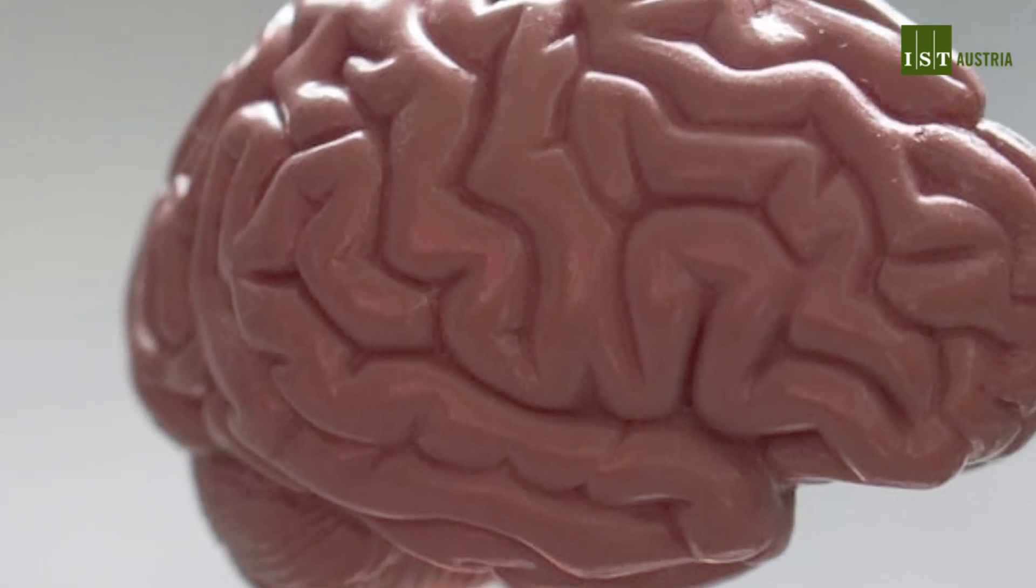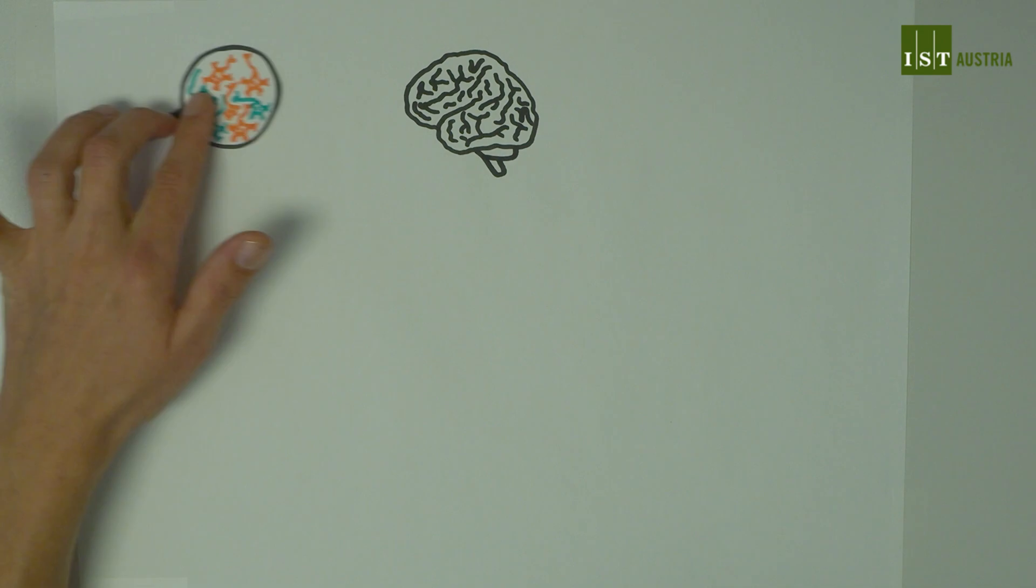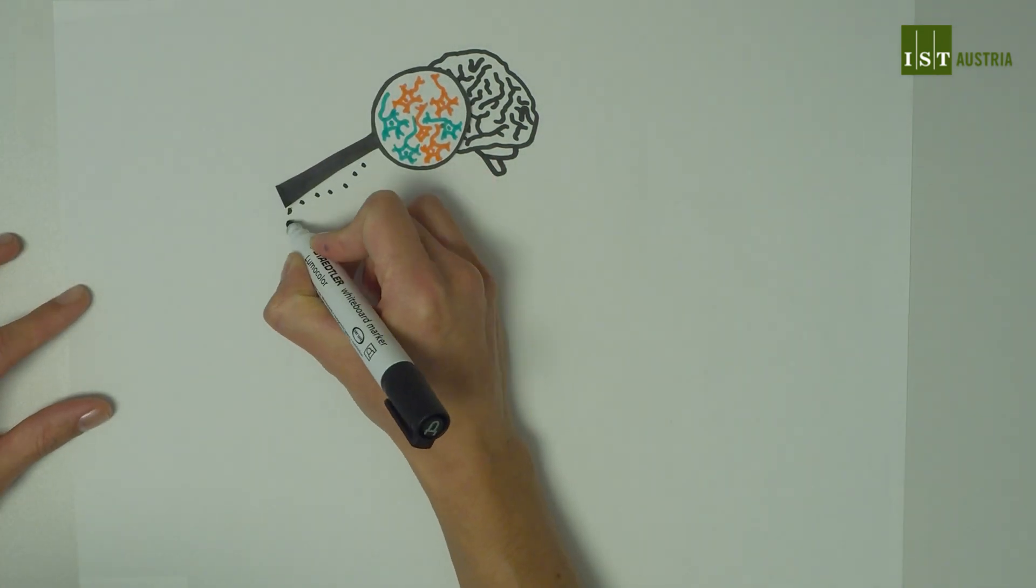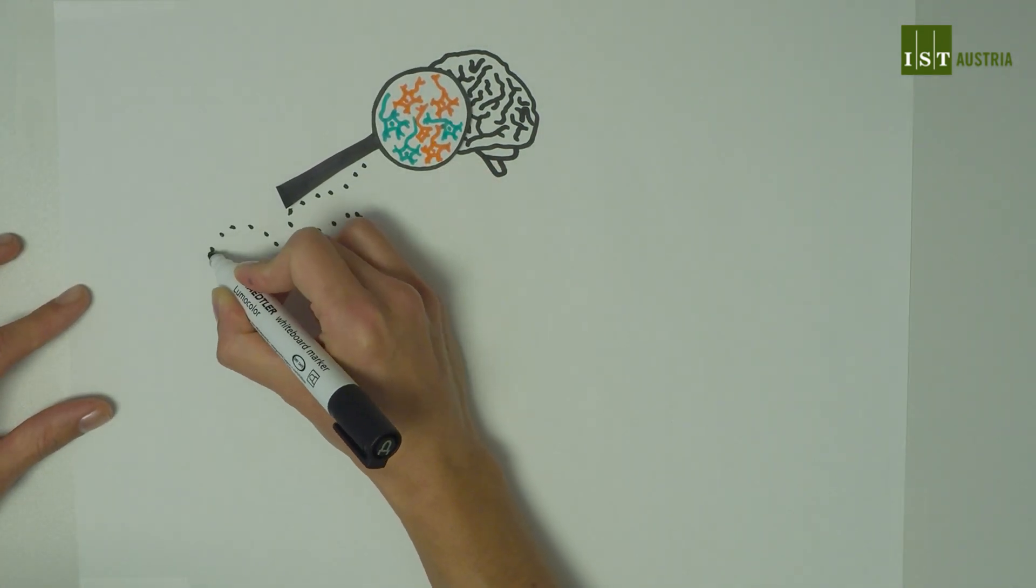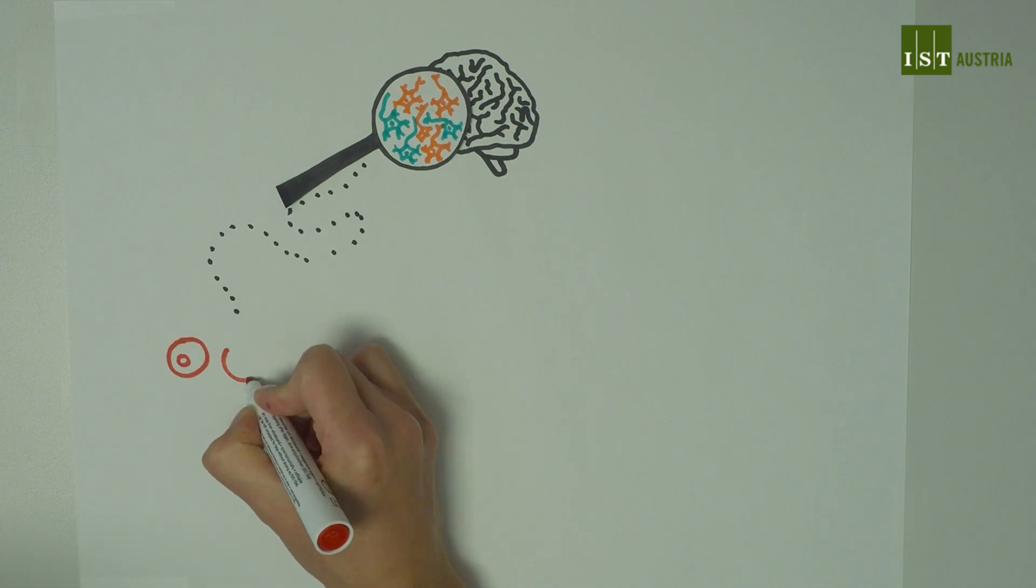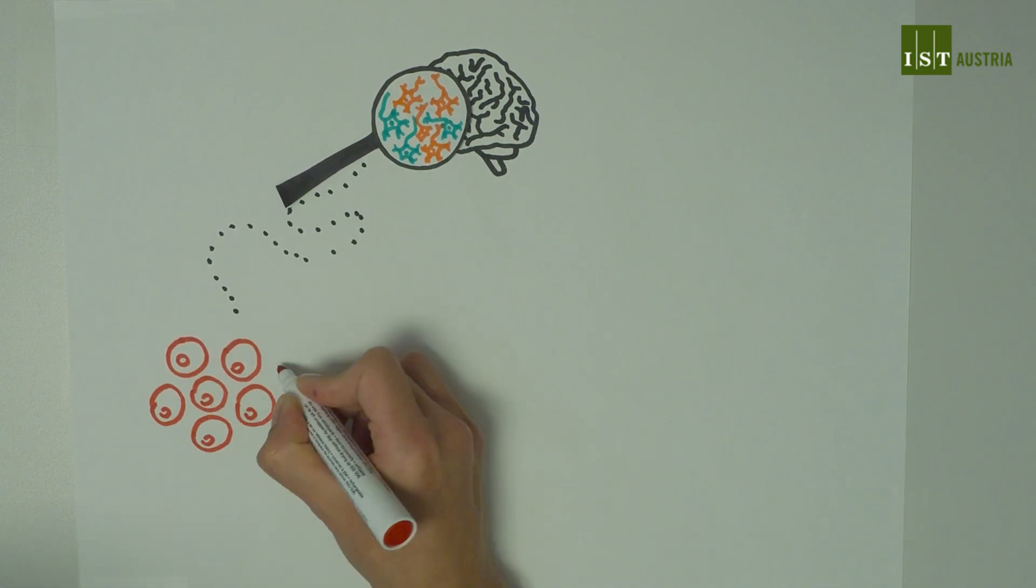we look at the basic components of the nervous system in ASD patients, their brain cells. Since we can't have direct access to the brain cells of the patients, we take a little detour and start from the patients' blood cells.